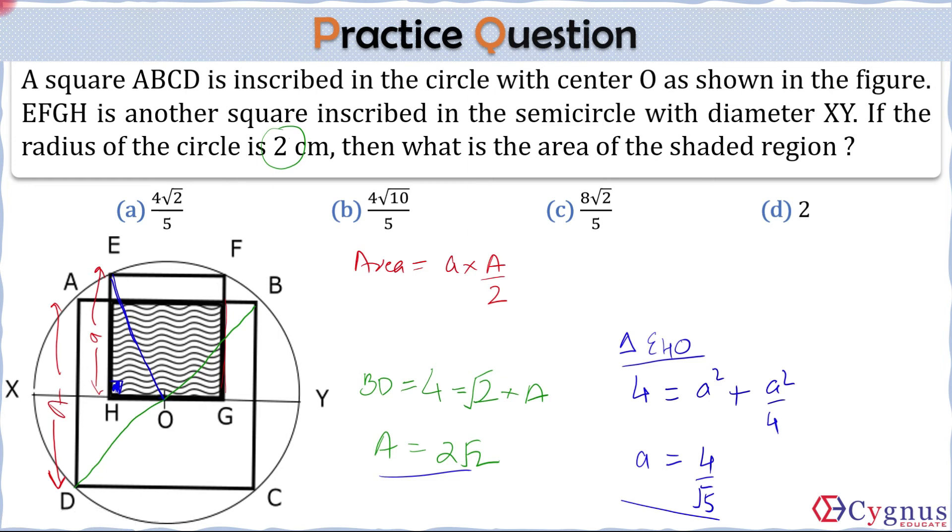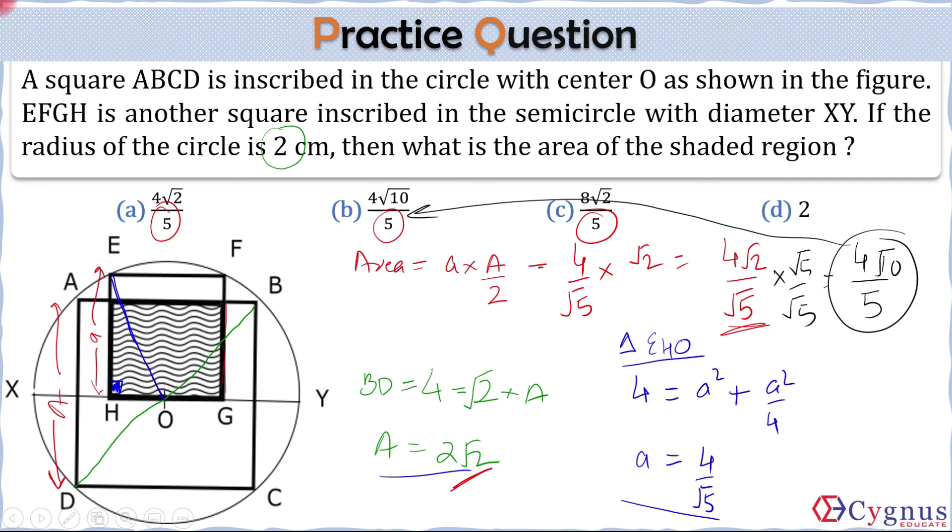Now the area of the shaded region is small a which is four by root five into capital A by two. Capital A by two will be root two. So this comes out to be four into root two upon root five. But there is no option which matches this. So what we let's do is we have the denominators as five and not root five. So let's multiply this expression with root five and divide with root five. So what you get is four into root ten divided by five which is same as option B here. So the correct answer for this question is option B, four root ten upon five.